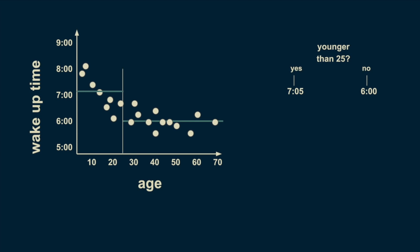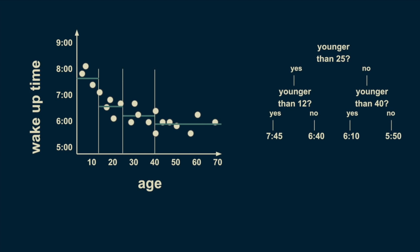There's still a lot of variation in the younger group, so we can split it again. Now the people younger than 12 can be estimated to wake up at 7:45, and people between 12 and 25 can be estimated to wake up at 6:40. The over 25 group can be meaningfully subdivided too. Those between 25 and 40 wake up on average at 6:10, and those between 40 and 70 wake up on average at 5:50. There's still a lot of variation in the youngest group, so we can further subdivide it. By slicing again on age 8, we can refine the estimates to more closely fit the data. We can also subdivide the 40 to 70 group on the 58 year line.